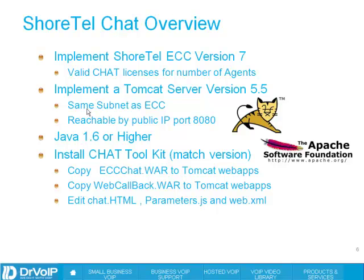You need to implement that server in the same subnet as the contact center. You will need to create a public IP address and port-forward port 8080 to the IP address of your Tomcat server. Optionally, you could put the Tomcat server in a DMZ, but most people will opt for the firewall option, which is well understood by IT folks. You will need Java 1.6 or higher — there is a JavaScript required to implement the chat functionality. So when you bring up your Tomcat server, you will also install Java 1.6 or higher.